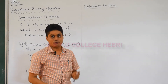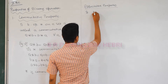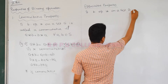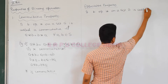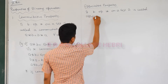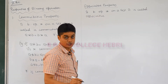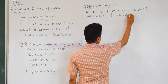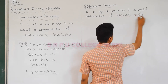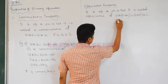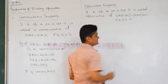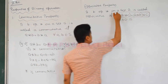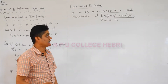Similarly, you can define associative property. A binary operation star on a set A is called associative if A star (B star C) is equal to (A star B) star C, for all A, B, C belonging to S. If this condition is satisfied, then star is called associative.